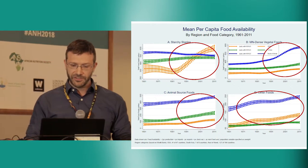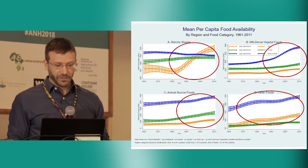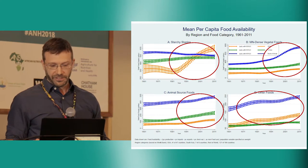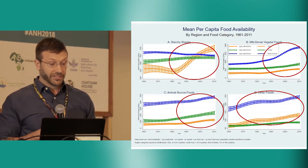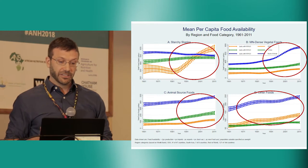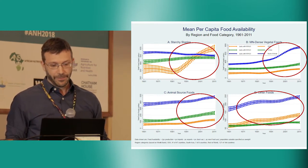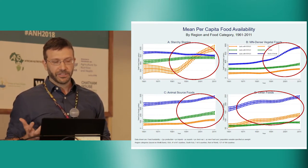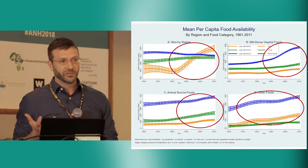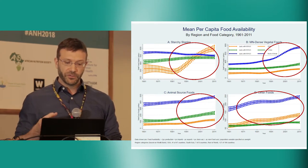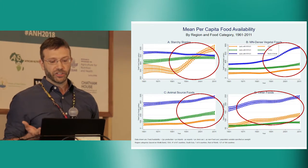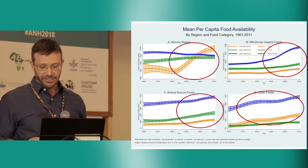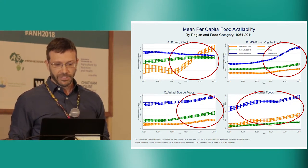We can see a similar trend, maybe not as pronounced, happening with animal source foods, and in each condition sub-Saharan Africa tends to lag. Where it doesn't lag is in increased availability of starchy staples since the 1980s. Also important to note is that other foods are increasing as well. Other foods includes categories such as edible oils, sugars, and sweets, which has potential implications for over-nutrition and chronic disease.